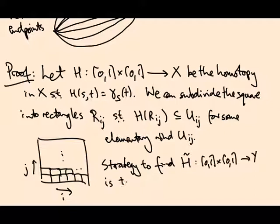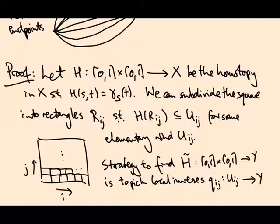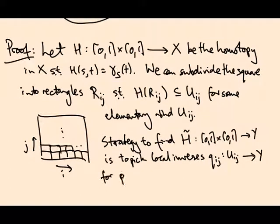...is to pick local inverses Q_ij defined on U_ij for each of these elementary neighbourhoods for the covering map, local inverses for the covering map, and set H tilde restricted to R_ij to be equal to Q_ij composed with H.